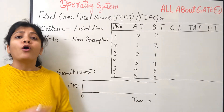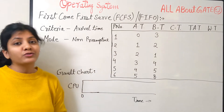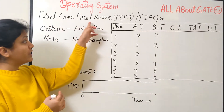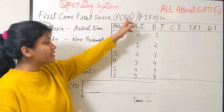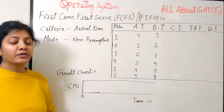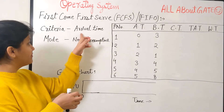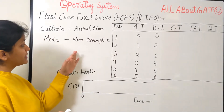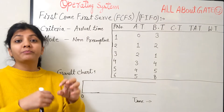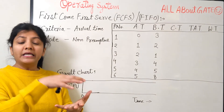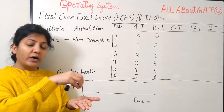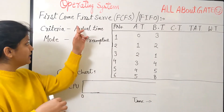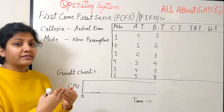Welcome to this channel where we talk about the GATE exam. We are studying operating system process management and have arrived at CPU scheduling algorithms. The first one is First Come First Serve, also known as FCFS or FIFO. The criteria on which FCFS works is arrival time — whichever process comes first gets scheduled first. The mode of execution is non-preemptive, meaning once a process is allocated the CPU, it either finishes or goes for I/O, but no other process will be given the CPU in between.